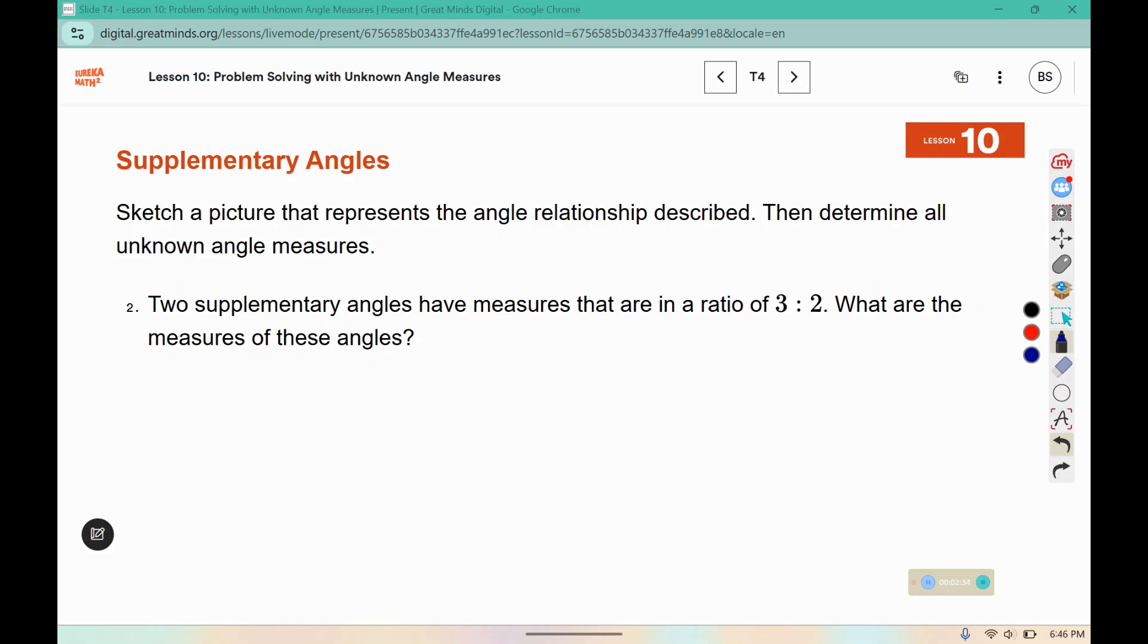Sketch a picture that represents the angle relationship described. Then determine all unknown angle measures. Two supplementary angles have measures that are in the ratio 3 to 2. What are the measures of these angles? So supplementary is 180. We have a 3 to 2.